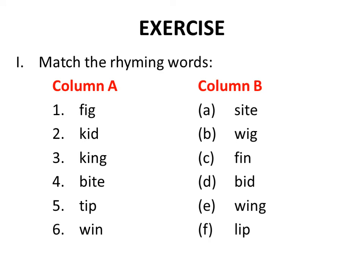Now children, let us do some exercise — match the rhyming words. We have just learned the rhyming words. Here are some rhyming words in column A and column B, and you have to match them. Like fig — F-I-G, fig — we have to find the rhyming word. Yes, it is wig — W-I-G, wig. So fig and wig are rhyming words. Then kid — K-I-D, kid. Its match is bid — B-I-D, bid. So kid and bid are rhyming words. Do this exercise in your notebook.